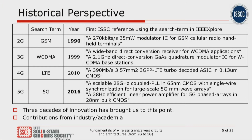To shed some light on the amount of research and development that has gone into putting these mobile phones in our pocket, in this slide I list some of the first references to these different technologies in papers presented at the ISSCC. You can see that the first reference to 2G GSM came in 1990, approximately 30 years ago. Mobile phones developed and manufactured in 2020 still contain radios that support the 2G standard. This is testament to the longevity and the robustness of these wireless technologies.